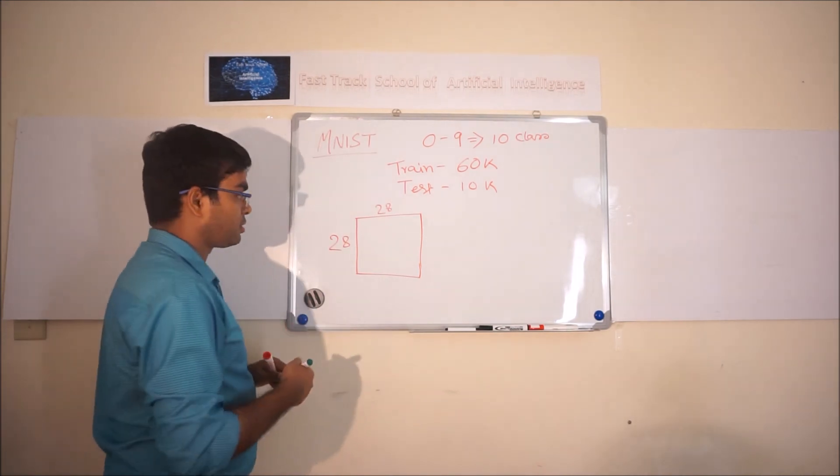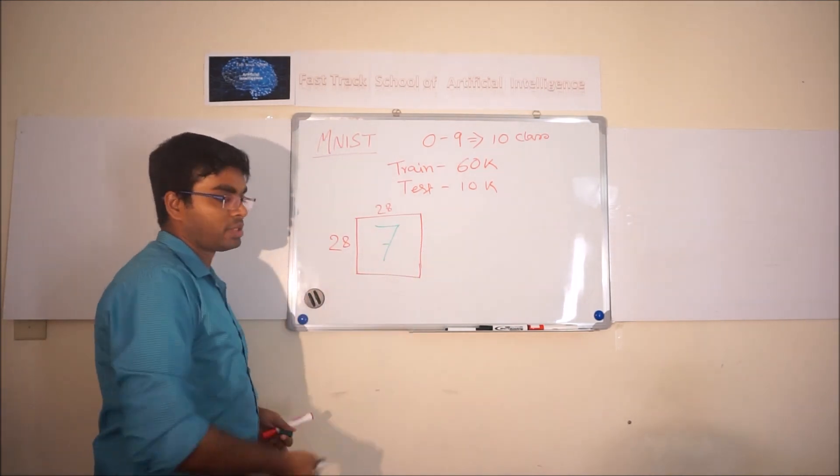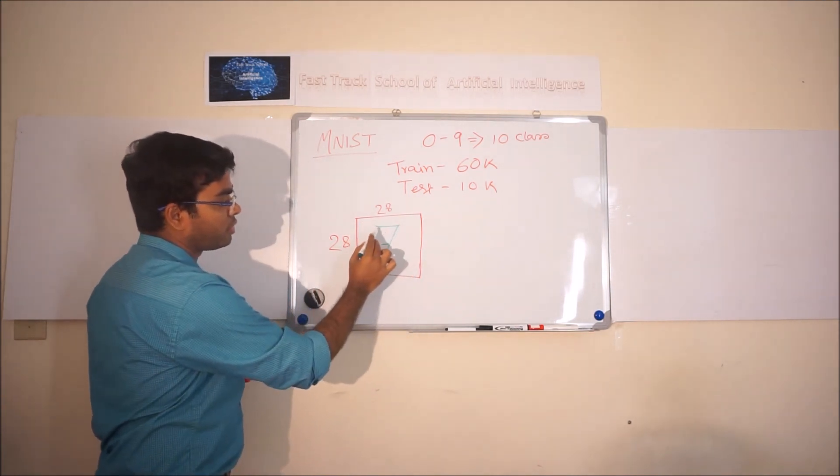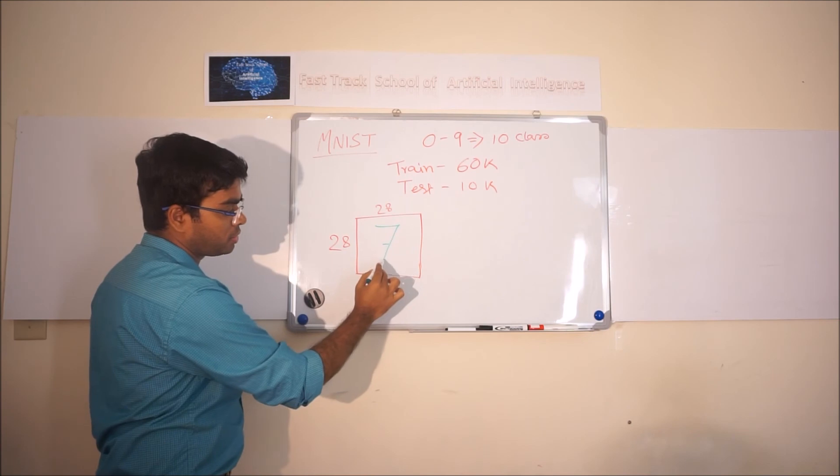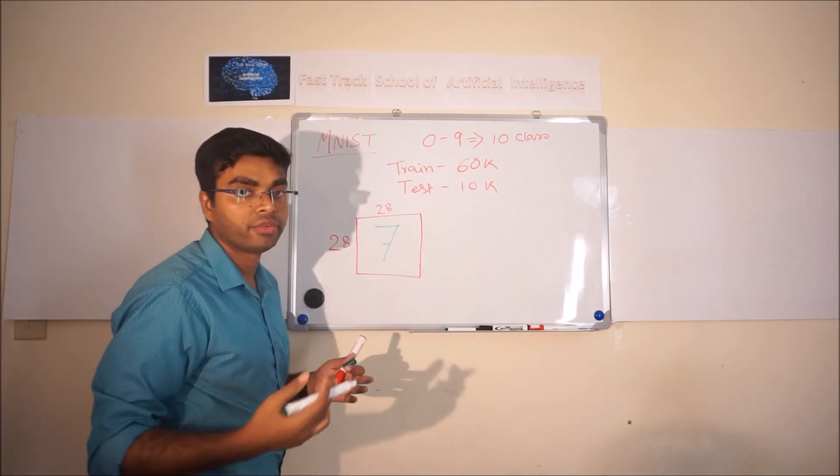And the handwritten digits are like, this is 7. So you will get all those pixels, and this 7, these particular sections, these set of pixels will have values 1 and rest of the things will have 0.